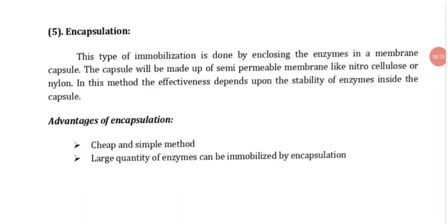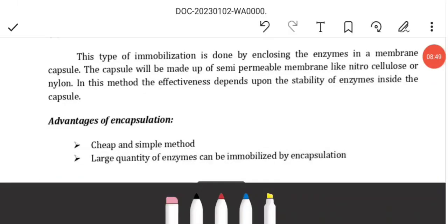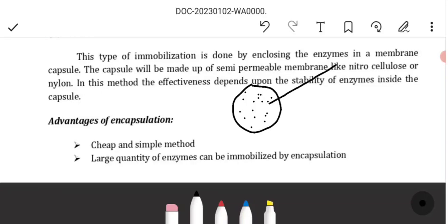Next is encapsulation. This type of immobilization is done by enclosing the enzyme in a membrane capsule. We are going to trap it in a membrane capsule. The capsule will be made up of semi-permeable membrane like nitrocellulose or nylon. This is the enzyme solution.